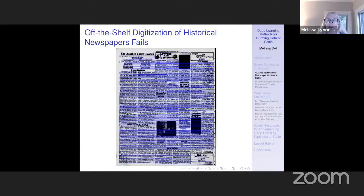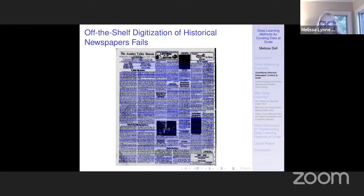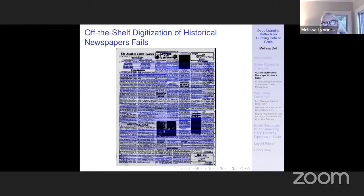If you just take these image scans and put them in an OCR engine, it's going to completely fail to give you any type of structured data. We found that almost universally it reads the newspaper like it's a single-column book, because that's what commercial OCR engines were trained on. But newspapers almost always have multiple columns, so all the text gets scrambled. It also has no way to tell what's a header, a headline, a caption, or an article. So essentially if you just put this into an OCR engine, everything's going to be all scrambled up.